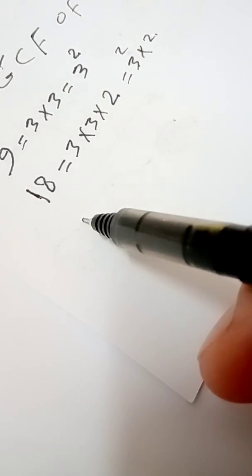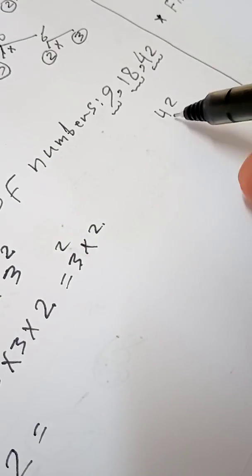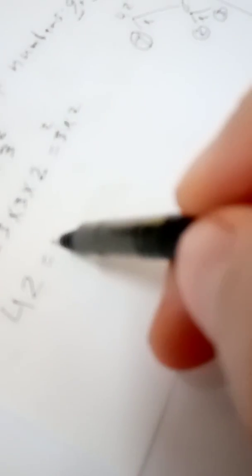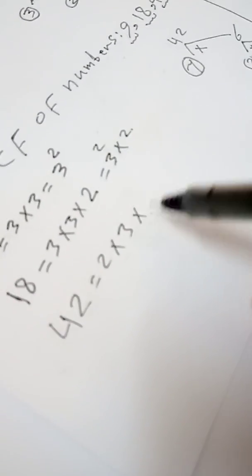Now for 42: what two numbers have a product equal to 42? We can write 7 times 6. Now 7 is prime — circle the prime number. 6 is composite, so the two numbers whose product equals 6 are 2 and 3. So the prime factorization of 42 is 2 times 3 times 7.